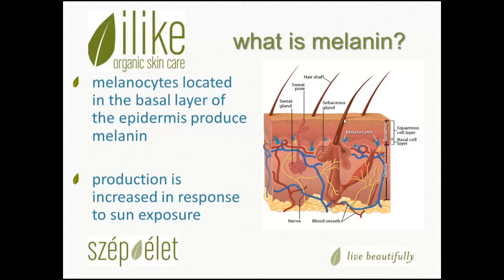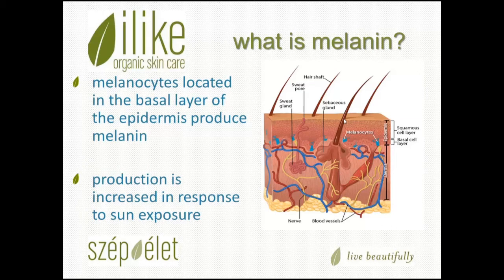Melanosomes leave the melanocytes and move into other cells in the epidermis. Mostly brown or black in color, the melanin deposits will determine the skin pigment, which varies depending on the number and distribution of the melanosomes. Aside from determining skin color, the light-absorbent melanin also helps to protect the DNA of our skin against UV radiation.